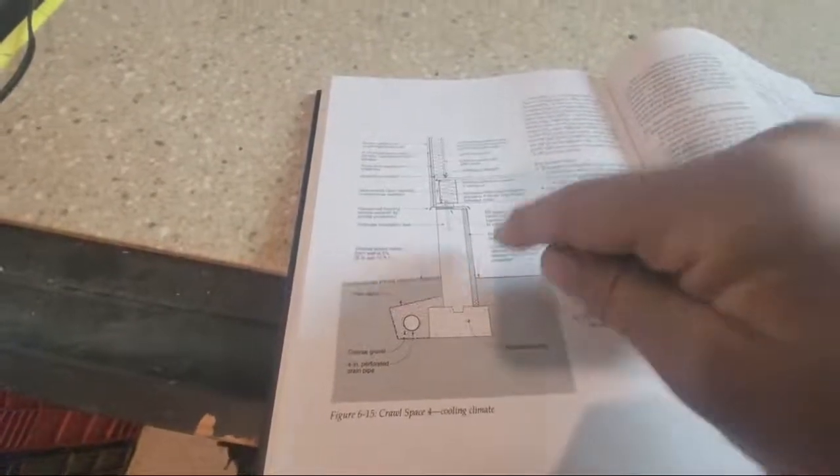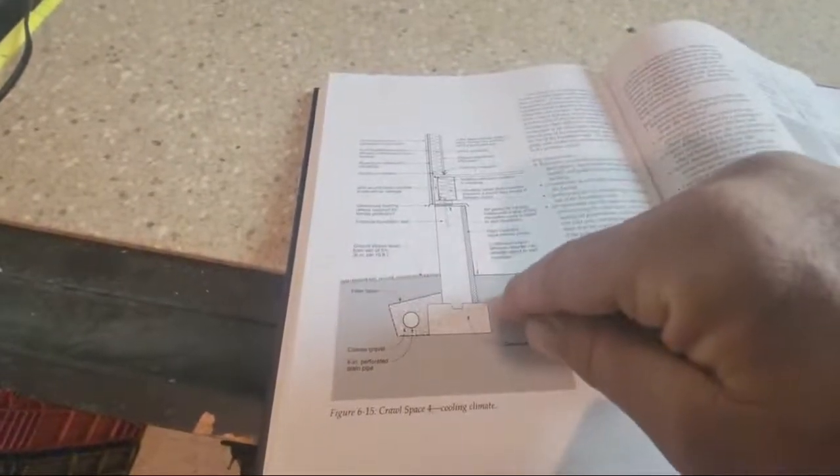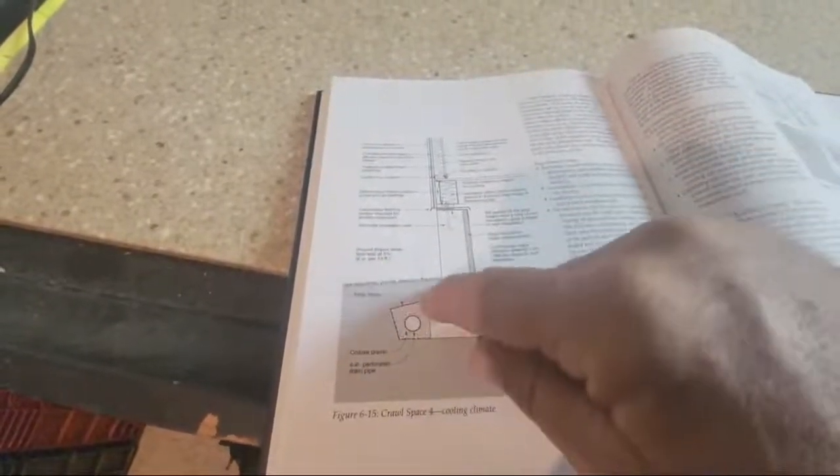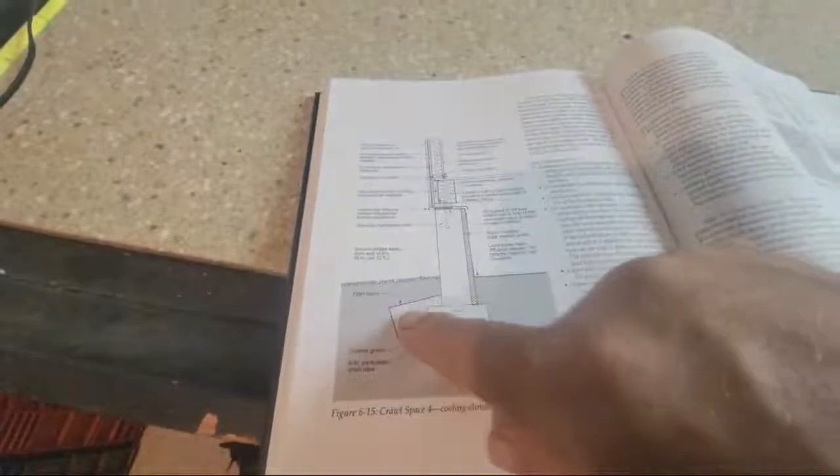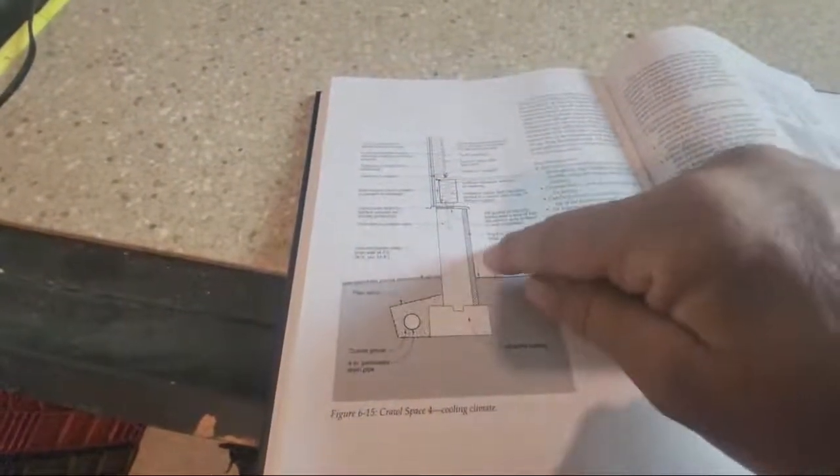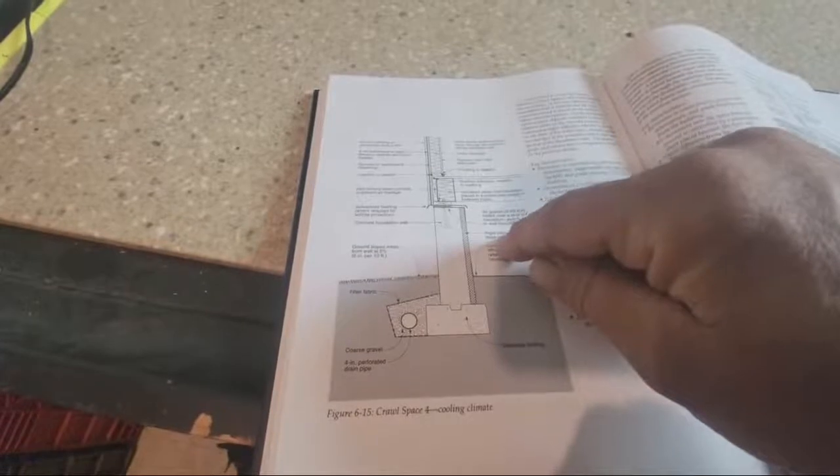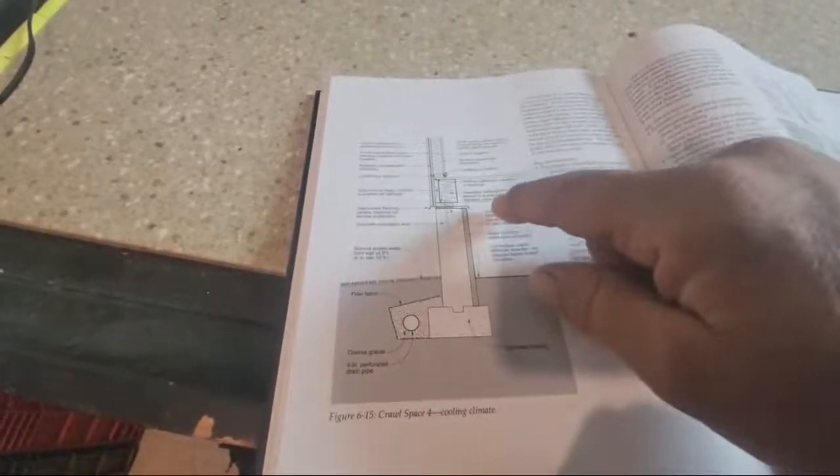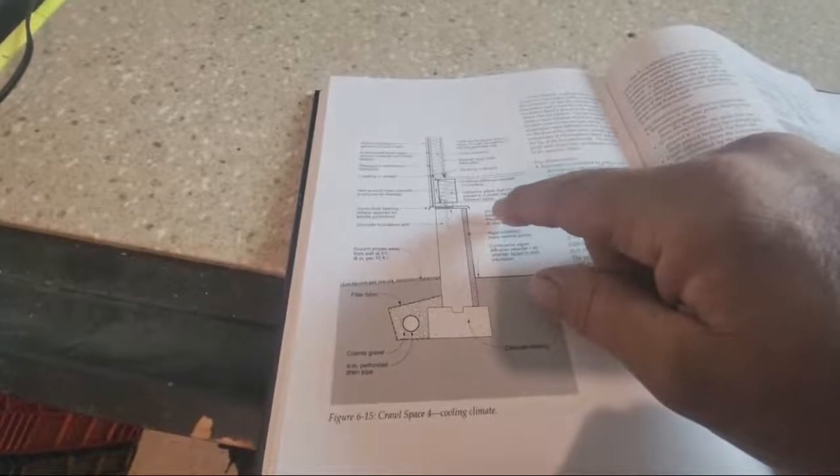What we are worried about is if we do this design, we can't have moisture in here. If we have a moisture problem, we need either a sump pump on the inside or dewatering well on the outside. We got to fix the grading, the gutter, the drain tile, whatever. We don't want water in this crawl space.